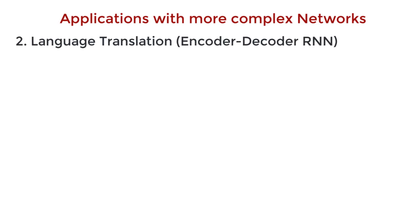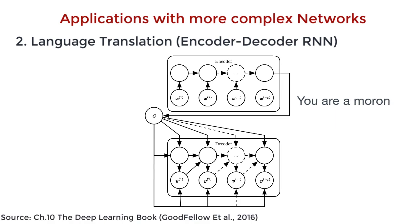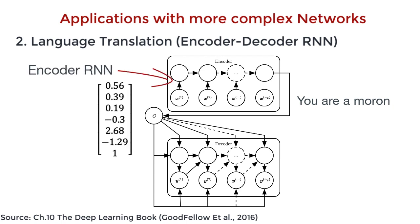Now, another popular field is machine translation. Given a sentence in English, how can the network generate a translation in, say, French? Well, we can use one RNN to encode the English sentence into some form that the computer can understand. And then we can use another RNN to decode the data into the translated French sentence. And this is exactly how widely used applications like Google Translate works.